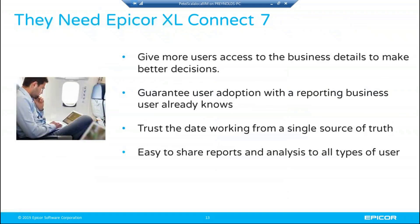Excel Connect 7 is really about getting more users access to business information to make better decisions. It's more than just automating what you do in Excel — it takes it a step further, allowing people to access data that you trust, that single source of information. Like SSRS or EDD, we give you direct access that allows you to drill down, answer questions, and trust the data because it's still coming from your Epicor system.